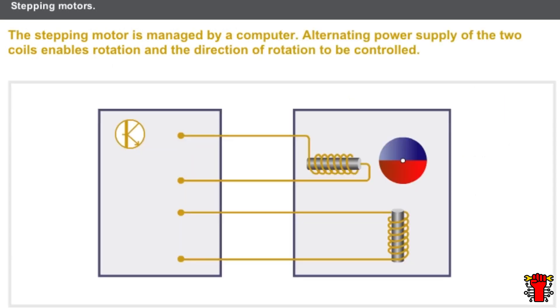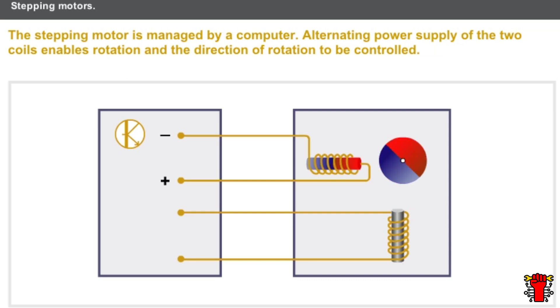The stepping motor is managed by a computer. Alternating power supply of the two coils enables rotation and the direction of rotation to be controlled.